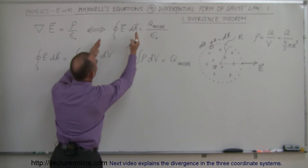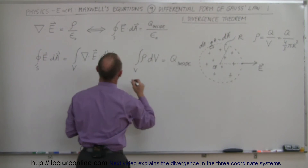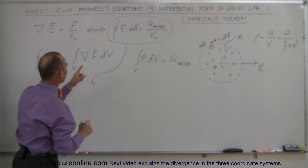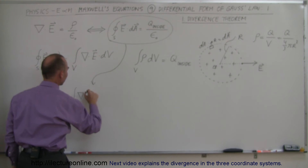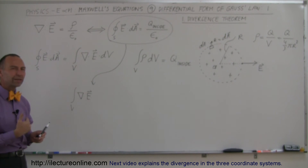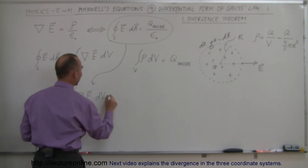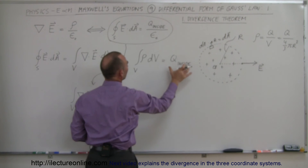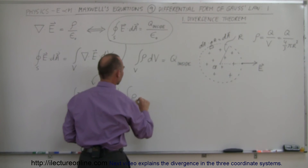So that means we can take the integral form of Gauss's Law, replace the left side by the divergence theorem, and replace Q inside by the volume integral of the charge density. We take the volume integral of the divergence of the electric field — we'll explain what that means in upcoming videos — times dV, and that equals Q inside divided by epsilon sub nought. So we write 1 over epsilon sub nought times the volume integral of the charge density inside the volume times dV.